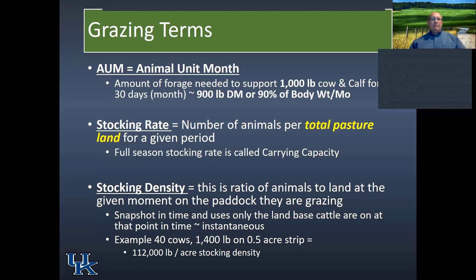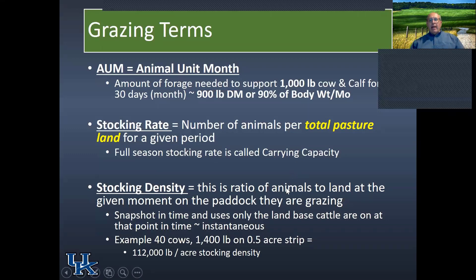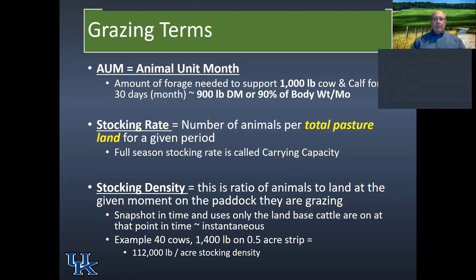Stocking density, rather than applying to the entire pasture system, is the stocking rate on a sub-part of the pasture system — specifically the ratio of animals to land area at a given moment on the paddock they are grazing. With stocking density, we're thinking of a subdivided pasture system; it's a snapshot in time, instantaneous.